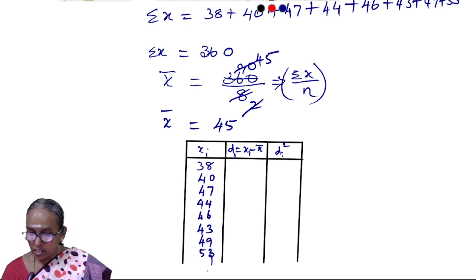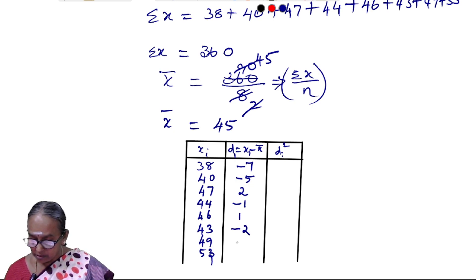Now we calculate the deviations from the mean. X bar equals 45. The deviations are: minus 7, minus 5, plus 2, minus 1, plus 1, minus 2, plus 4, plus 8.